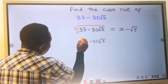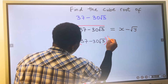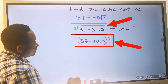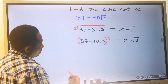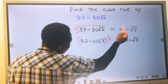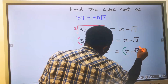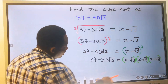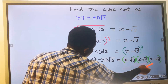This cube root can be written as to the power of 1 over 3 — both are the same thing. Next, I will take this cube root to the other side, and this cube root will become to the power of 3. This is the same as expanding these three times.